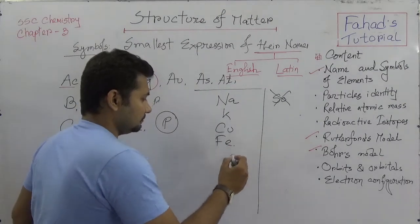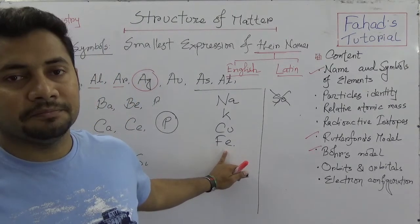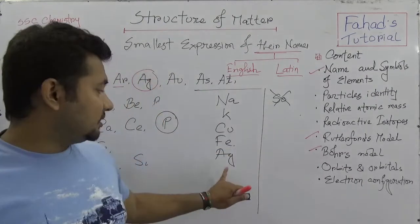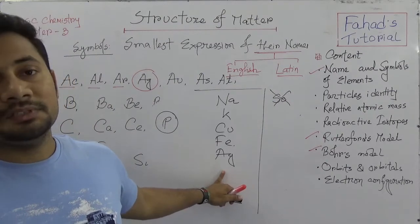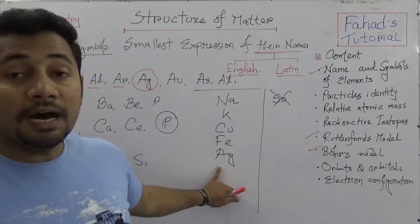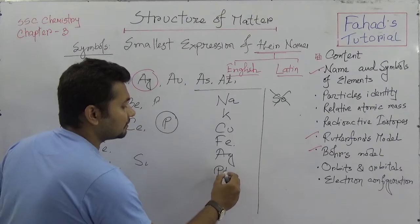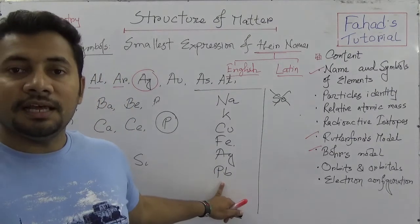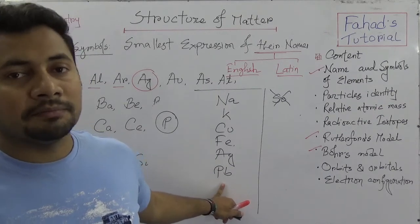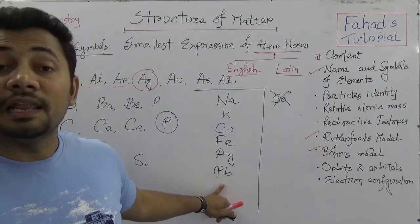'FE' is iron because the Latin name of iron is Ferrum. Silver is expressed as 'AG' — not SI — because the Latin name of silver is Argentum. 'PB' is lead because the Latin name of lead is Plumbum — that is why we use PB, as the expression of plumbum.